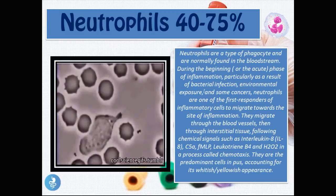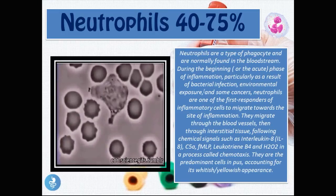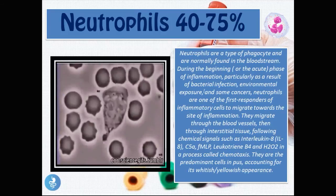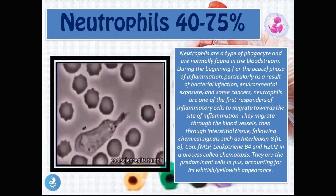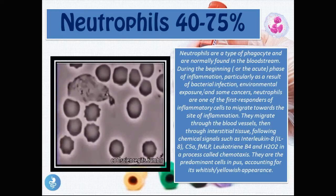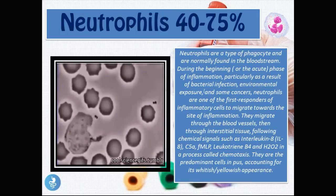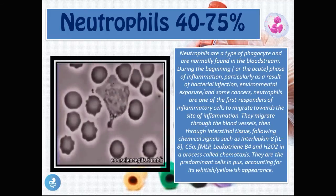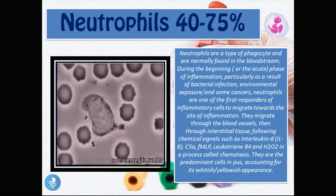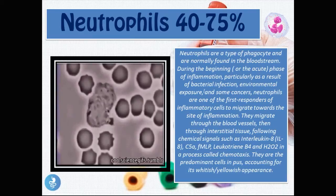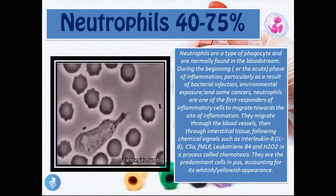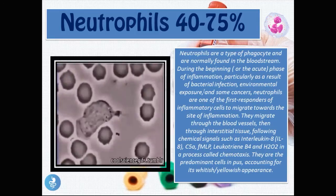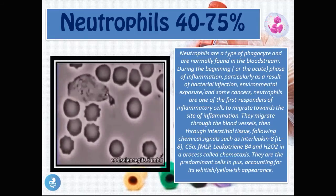Neutrophils are one of the first responders to migrate toward the site of inflammation. They migrate through blood vessels and interstitial tissue following chemical signals such as interleukin-8, C5a, fMLP, leukotriene B4, and H2O2 — a process called chemotaxis. They are the predominant cells in pus, accounting for its whitish-yellowish appearance. The body sends out these chemical signals — interleukins — to attract neutrophils to the site of infection or inflammation.